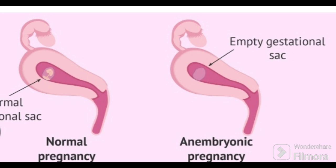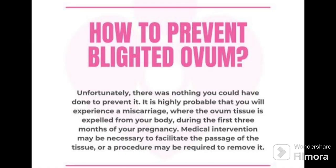There is no fetal pole and no cardiac activity, so this is called blighted ovum. In short, we say that pregnancy has occurred but there is no growth, no cardiac activity, no fetal pole, and no development.